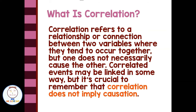What is correlation? Correlation refers to a relationship or connection between two variables where they tend to occur together, but one does not necessarily cause the other. Correlated events may be linked in some other way, but it's crucial to remember that correlation does not imply causation.